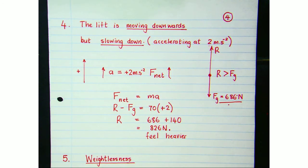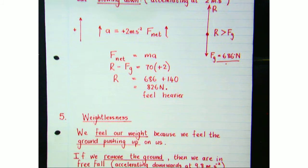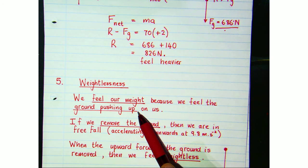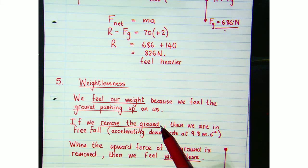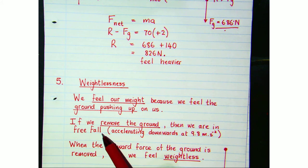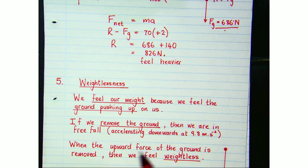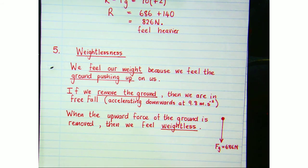When do you feel weightless? We feel our weight because the ground or a chair pushes up on us — that normal force is what makes us feel weight. If the ground is removed — if we're in free fall — we accelerate downwards at 9.8 m/s² with nothing pushing up on us, so we feel weightless. This does not mean the gravitational force has disappeared; gravity still acts on us, but we're simply not experiencing the upward normal force that allows us to feel our weight.